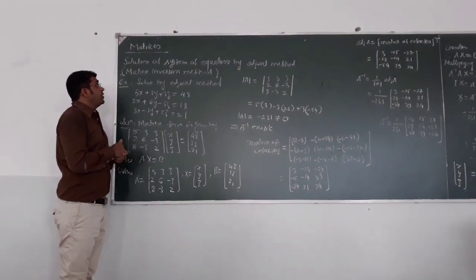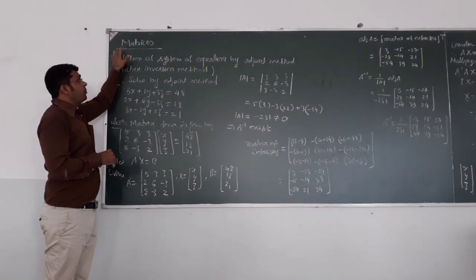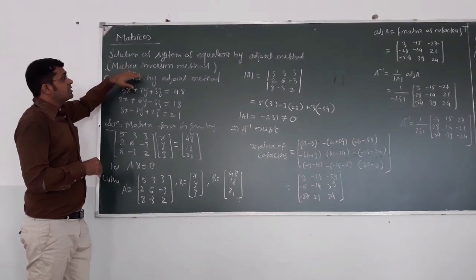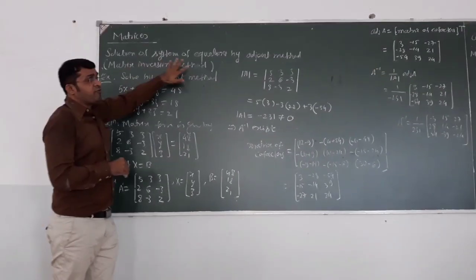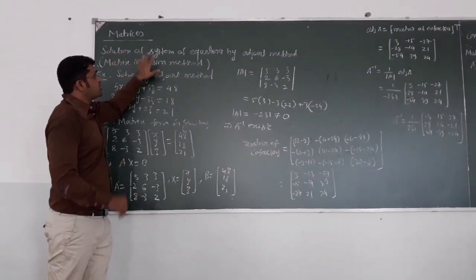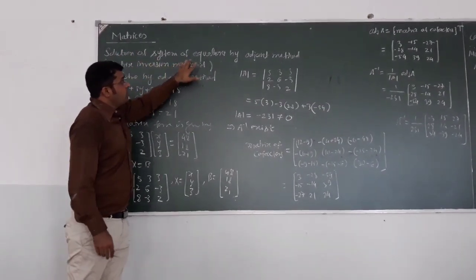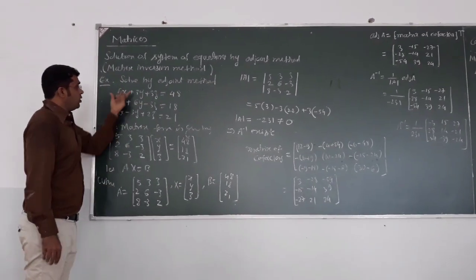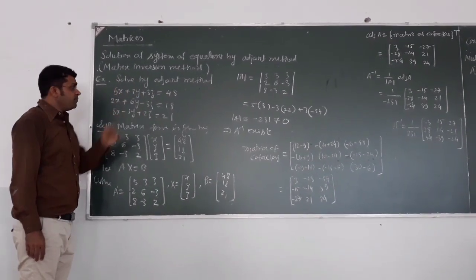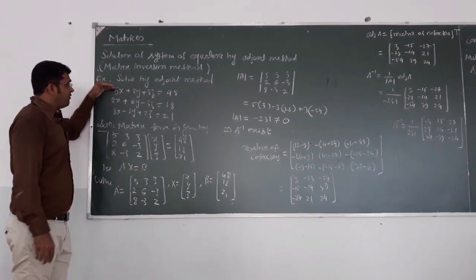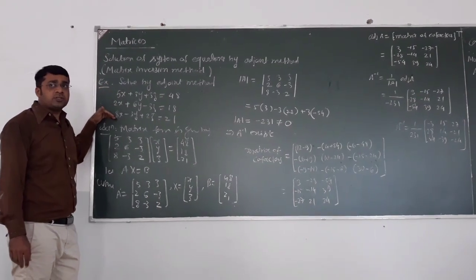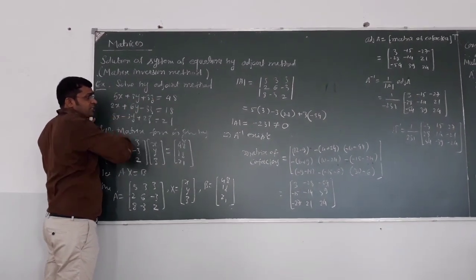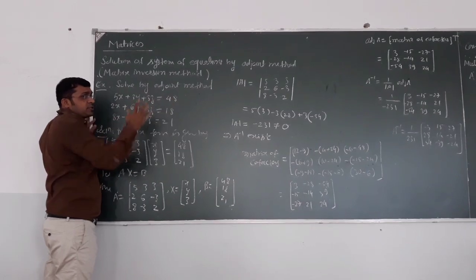Today's topic is matrices. We are solving a system of linear equations using the adjoint method. We are looking at an example directly — we have three equations with three unknowns: x, y, and z. We have to find the values of x, y, z which will satisfy all three equations.